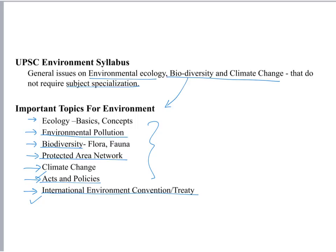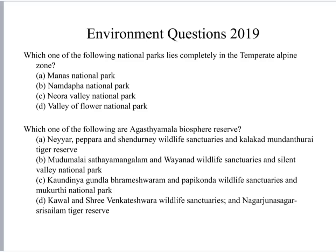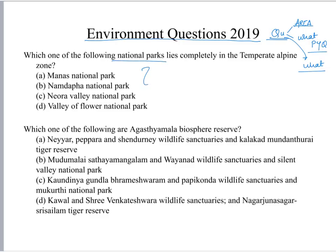Now let us see the 2019 UPSC preliminary examination questions. Our approach will be to see what area the question belongs to, what the previous year question was on that topic, and what should be our strategy. The first question is about national parks, related to the protected area network. The question asks which national park is completely lying in a temperate alpine zone — that is, which national park is located in a temperate alpine climate region.